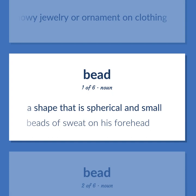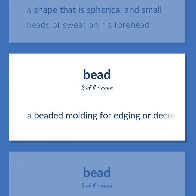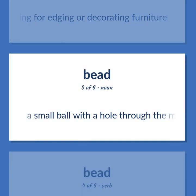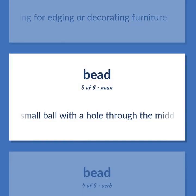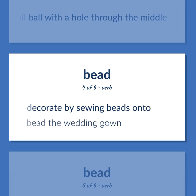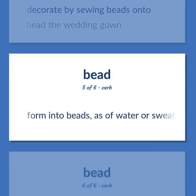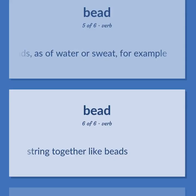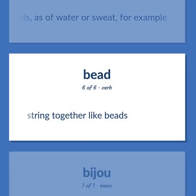A shape that is spherical and small. Beads of sweat on his forehead. A beaded molding for edging or decorating furniture. A small ball with a hole through the middle. Decorate by sewing beads onto. Bead the wedding gown. Form into beads, as of water or sweat, for example. String together like beads.